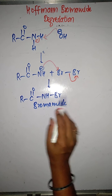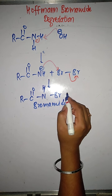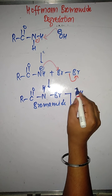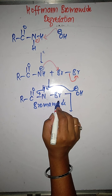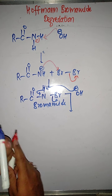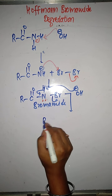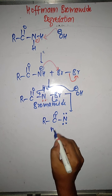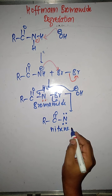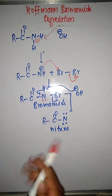The bromamide still contains one acidic hydrogen. Another base molecule abstracts this acidic hydrogen; the electron pair shifts to nitrogen, and the bromine leaves. This gives us a nitrogen with a lone pair — this intermediate is called acyl nitrene.